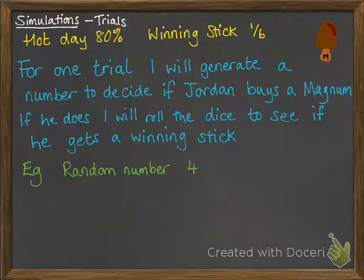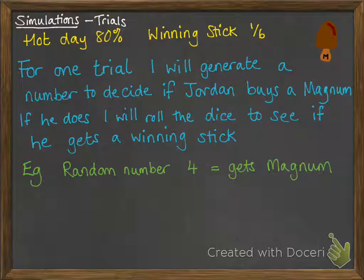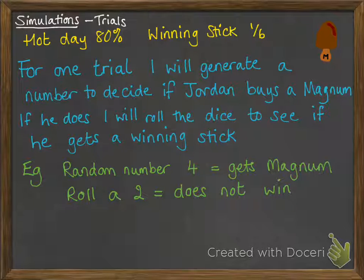For example, our random number comes out as a four. On the previous video we decided that numbers one to eight represent that he gets a Magnum, so he buys one. Then we roll a two — because he bought the ice cream we need to decide if he got a winning stick. A two means he does not get a winning stick, because numbers one to five were not winning; number six was our winning number.